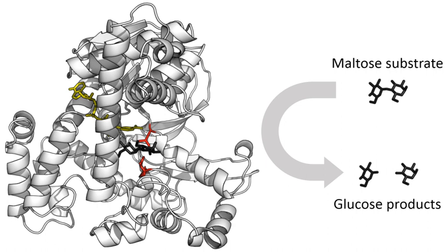Enzymes are usually much larger than their substrates. Sizes range from just 62 amino acid residues for the monomer of 4-oxalocrotonate tautomerase, to over 2,500 residues in the animal fatty acid synthase. Only a small portion of their structure, around 2–4 amino acids, is directly involved in catalysis at the catalytic site. This catalytic site is located next to one or more binding sites where residues orient the substrates. The catalytic site and binding site together comprise the enzyme's active site. The remaining majority of the enzyme structure serves to maintain the precise orientation and dynamics of the active site.